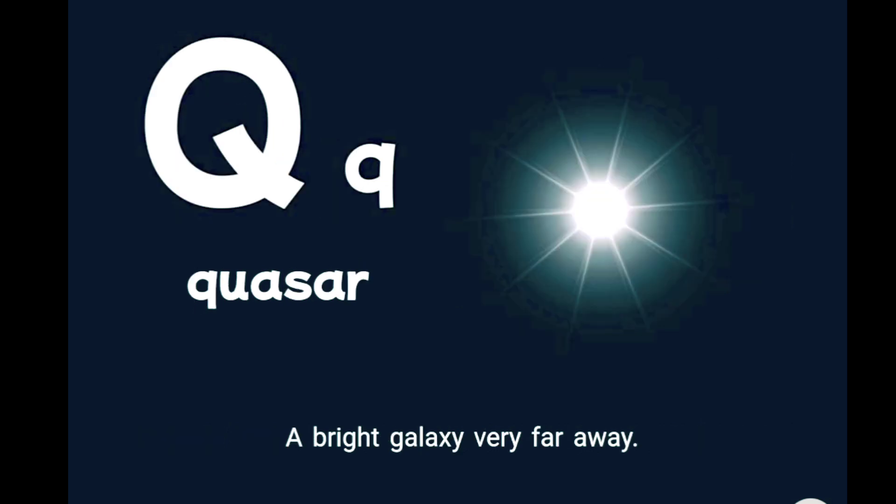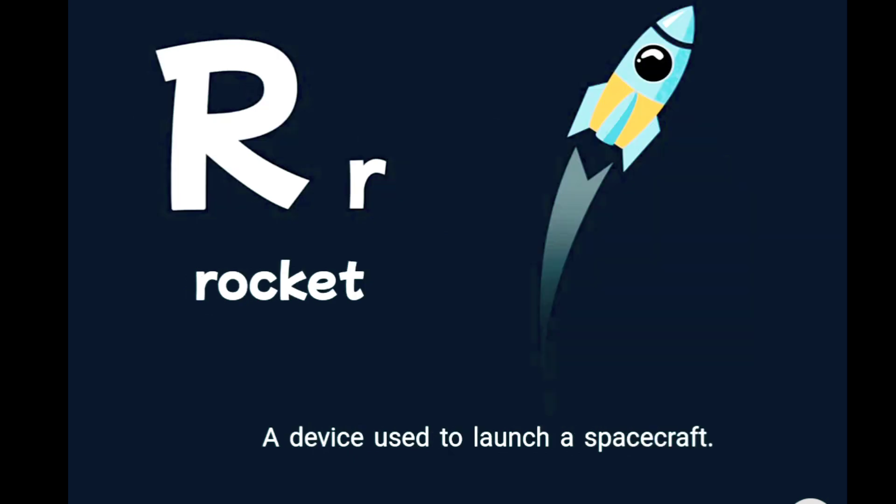Q is for quasar, a bright galaxy very far away. R is for rocket, a device used to launch a spacecraft.